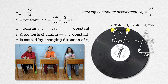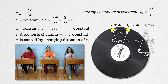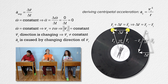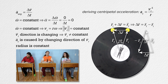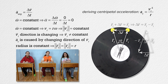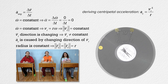This forms an isosceles triangle with an angle delta theta and two sides of equal magnitude, r initial and r final. The radius of the circle the chip is going through is constant, so the magnitudes of r initial and r final are both just r, the radius of the circle.